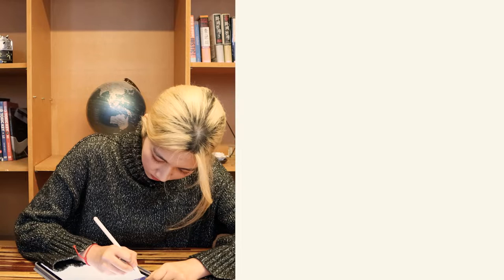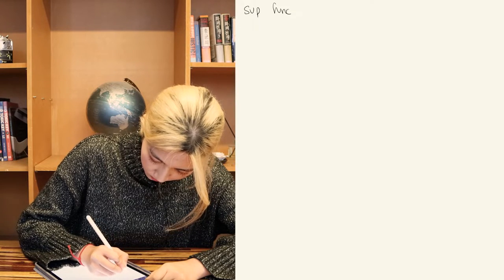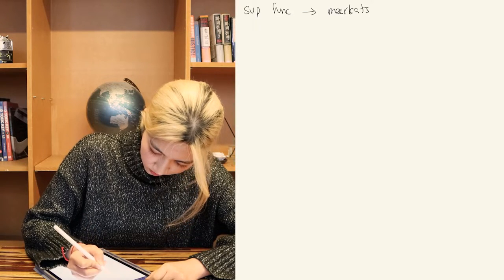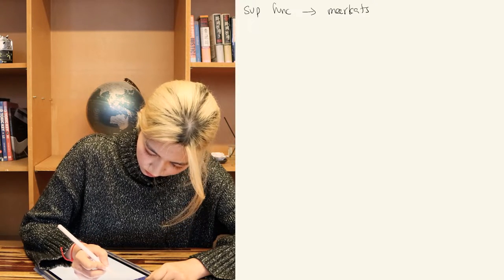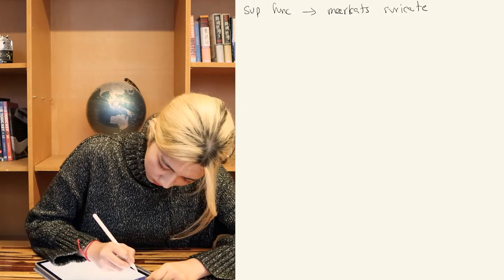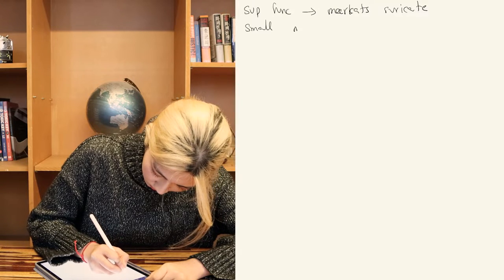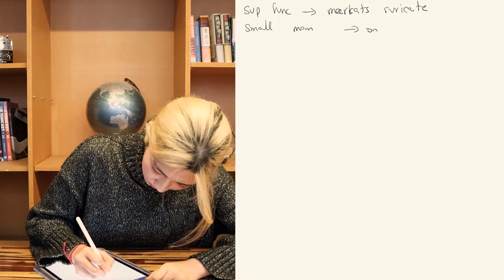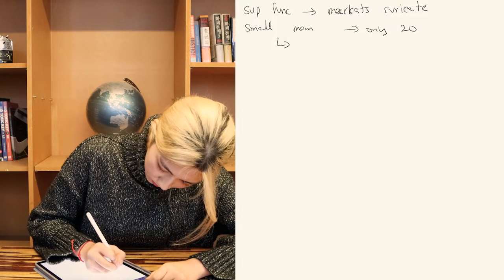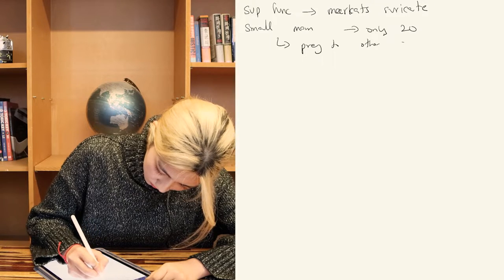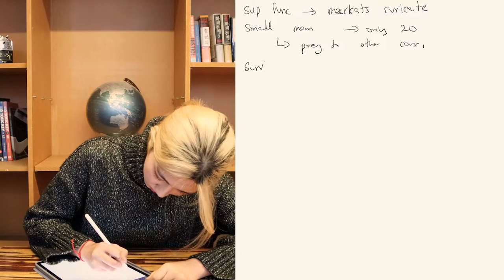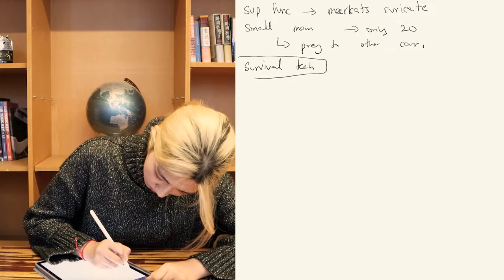Professor: Some animals have superior structural functions, like humans. For example, meerkats. Most of you might have seen meerkats in the zoo. The meerkat, also known as the suricate, is a small mammal — a fully grown meerkat only reaches a height of 20 centimeters. As meerkats are small, they easily become prey to other carnivores. As a result, meerkats have developed their own survival techniques. Today we are going to learn about the survival skills of meerkats.